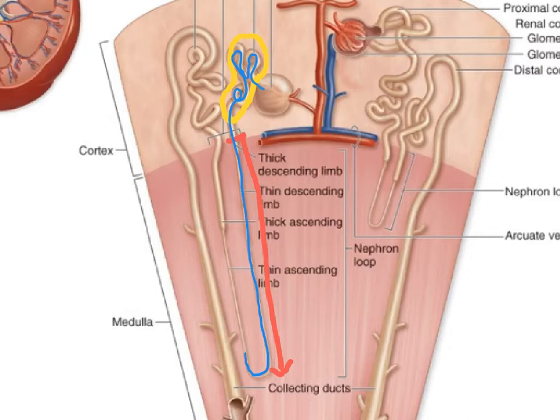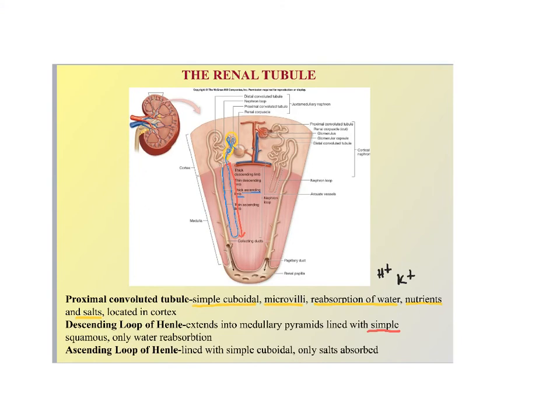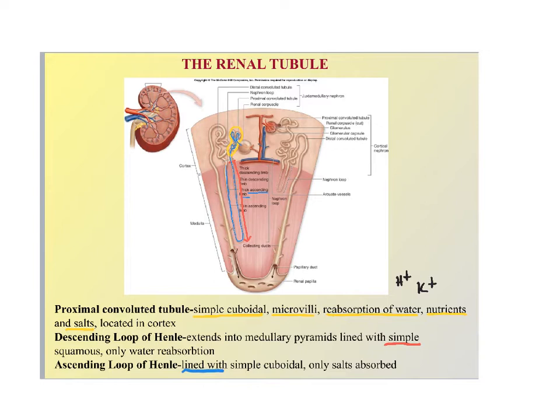That filtrate makes a U-turn and goes back up, becoming a different section called the ascending limb of the loop of Henle — going back up the medulla. That filtrate comes back up the ascending limb, which is a continuation of the tube and is lined with simple cuboidal epithelial tissue. Here, only salts are reabsorbed.